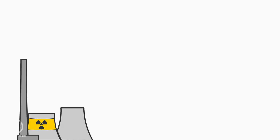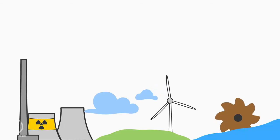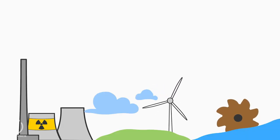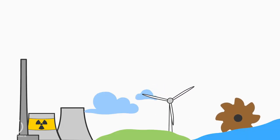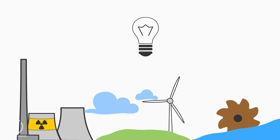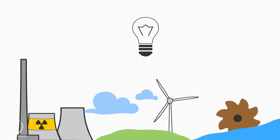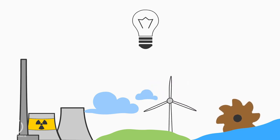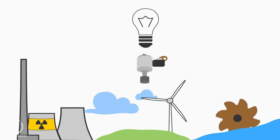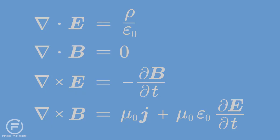Power generation — whether from nuclear, wind, or hydroelectric power plants — the energy released must first be converted into electric energy so that people can use it. That happens with electric generators. These, in turn, are based on the Maxwell equations.